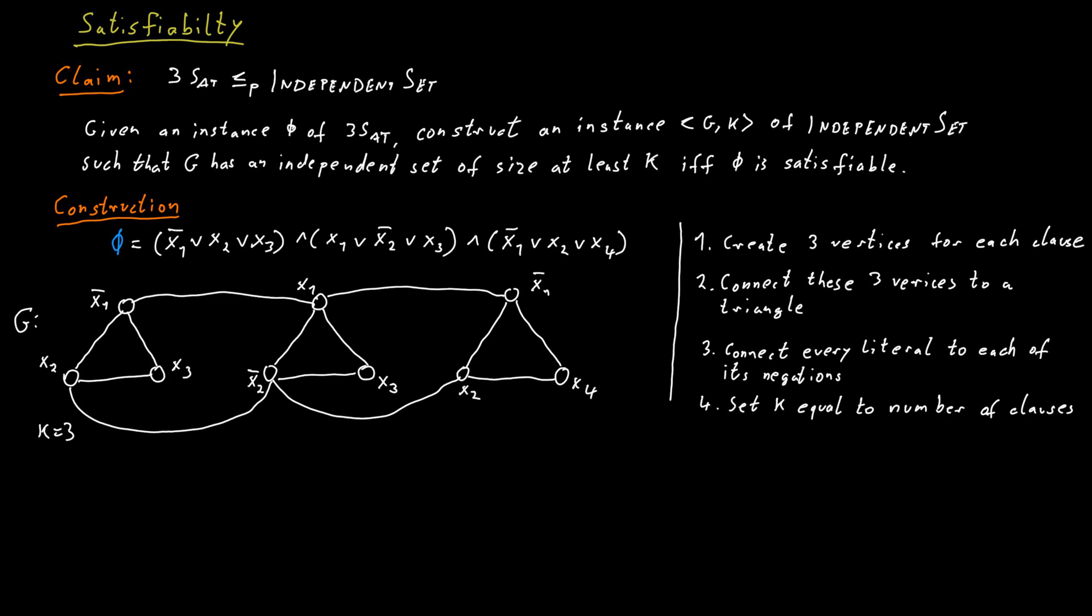This ensures that if we have an independent set, we pick at least k vertices. But we know that we can pick at most one vertex from each triangle. So now we know that in an independent set, we must have picked exactly one vertex in each triangle. Because the number of triangles is equal to the number of clauses in the formula.